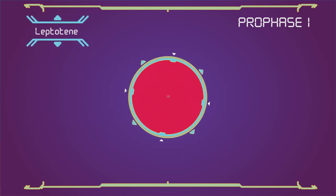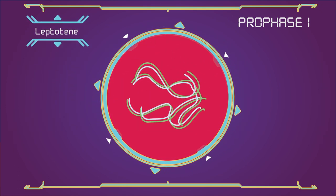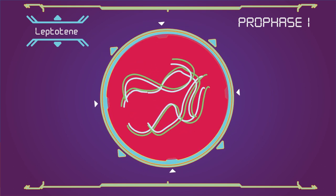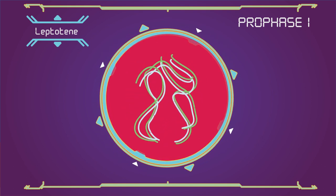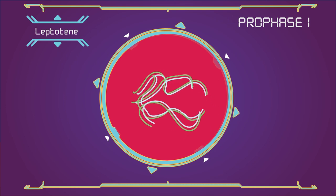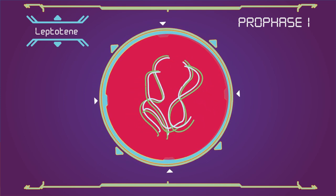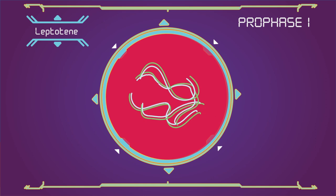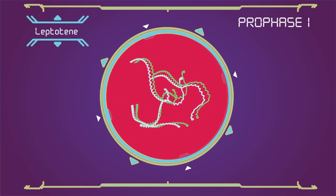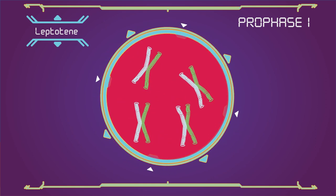Leptotene: In this stage of prophase 1, individual chromosomes, each consisting of two sister chromatids, become individualized to form visible strands within the nucleus. Leptotene is of very short duration and it's when the progressive condensation and coiling of chromosome fibers takes place.